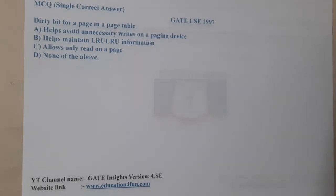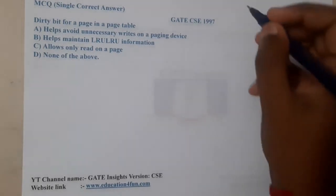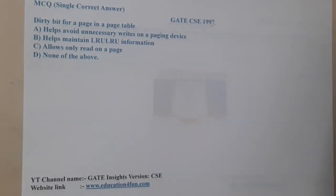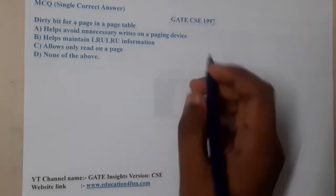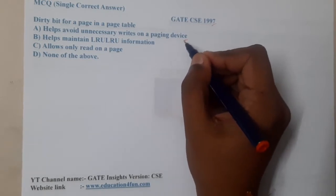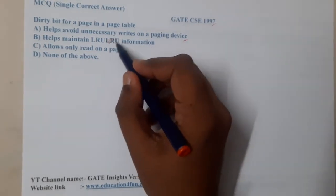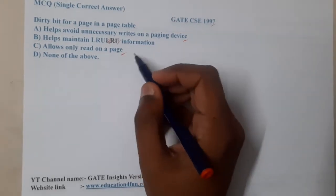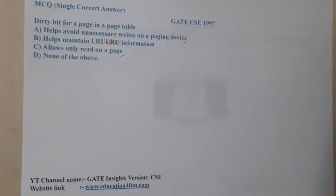Hello guys, we are back with our next lecture. This question belongs to GATE CSE 1997. The given question is: a dirty bit for a page in a page table — option A says helps avoid unnecessary writes on a paging device, option B says helps implementation of LRU information, option C allows only read on page, and option D is none of the above.